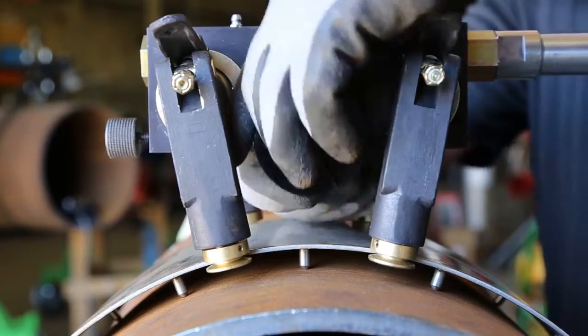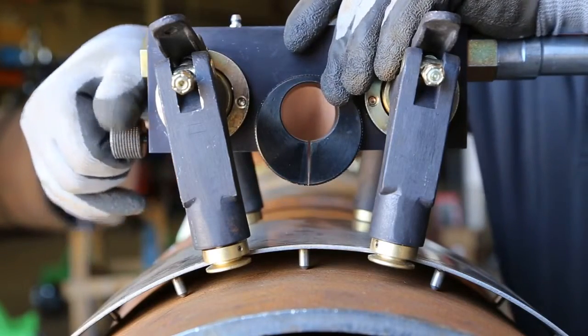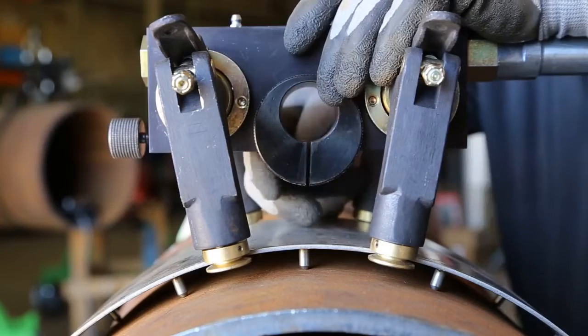Loosen the set screw, install the eccentric torch holder or donut. Do not clamp on the gap or opposite the gap in the eccentric torch holder.